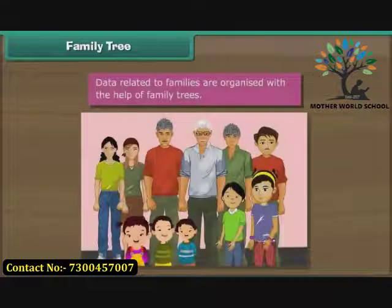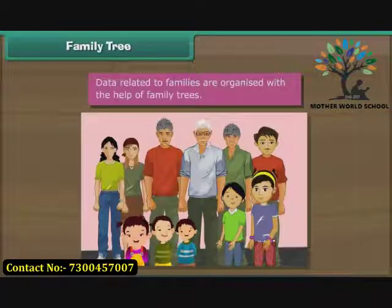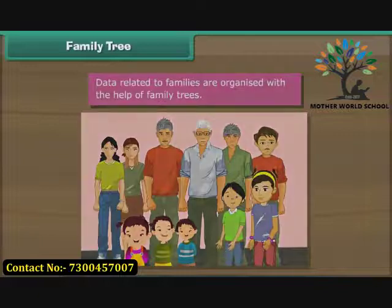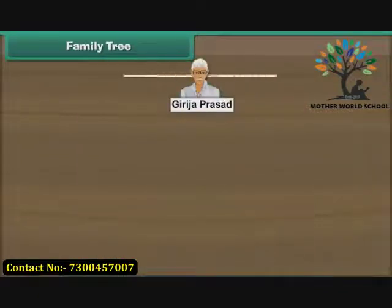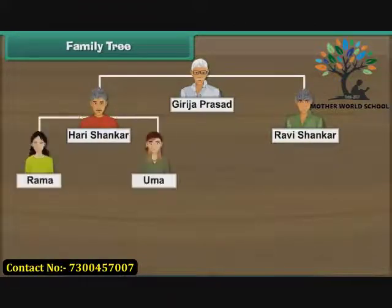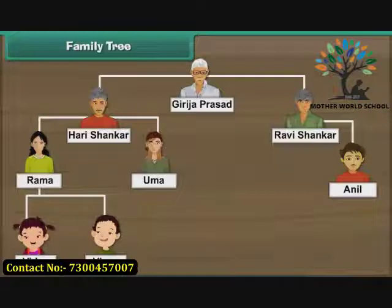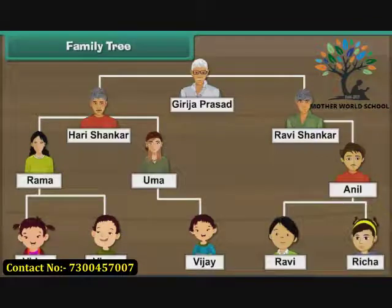Data related to families are organized with the help of family trees. Ravi lives in a joint family. Let us represent his family with a family tree. The eldest member is Ravi's great-grandfather, Girija Prasad. He has two sons, Hari Shankar and Ravi Shankar. Hari Shankar has two daughters, Rama and Uma. Ravi Shankar has one son, Anil. Rama has a daughter Vidya and a son Vinay, while Uma has a son Vijay. Anil has a son Ravi and a daughter Richa. The family tree of Ravi's joint family is now complete.